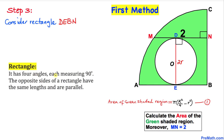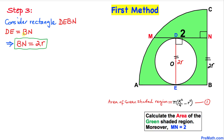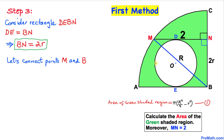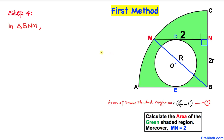Now let's focus on rectangle DEBN. A rectangle has four 90° angles and opposite sides of equal length. Since DE = 2r, the opposite side BN is also 2r. So BN equals 2r — keep that in mind. Now let's connect points M and B. The segment MB is simply the radius of the bigger circle, R.